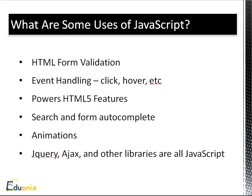Search and form autocomplete. We've seen this with search engines like Google. When you start to type, it'll give you some suggestions. That's all done with JavaScript or some JavaScript library. Animations. If you want to make things move on a website or change shape, things like that. jQuery, Ajax, and Mootools. There's a whole bunch of libraries that are all written in JavaScript that can do just some awesome things on the web.